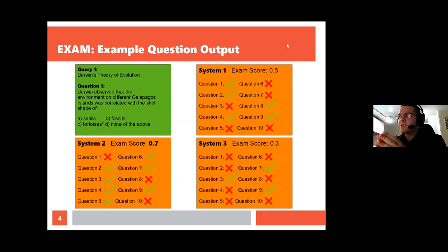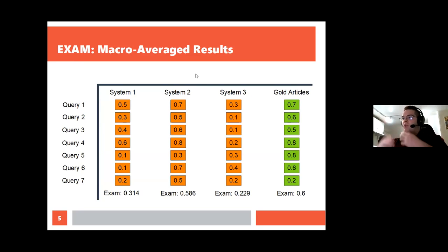Here's a slightly more laid out example you can see here for the performance of these different toy examples of systems and how they perform on the particular query of Darwin's theory of evolution. You can see of these that system two is performing the best based off of the number of questions it's getting answered or the number of questions it can answer correctly. But we're not limited to doing this for just one query. We can do this across multiple different queries. So query one might be around Darwin's theory of evolution, query two might be about astronomy of planetoids. And we can take all of these different results across the different queries and do a macro average over them to get a system-wide score, which is the overall system EXAM score.